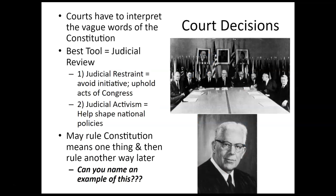Court decisions have perhaps the greatest effect in terms of changing the Constitution indirectly, because of interpretation. The court's position is to use the laws that exist but interpret them in the best way they see fit at that time. Because of the vague wording of the Constitution, it's open to interpretation. The tool of judicial review — where the court can examine laws, amendments, and all of the Constitution and determine if they're constitutional — is the most important power. This leads to two specific terms linked to how courts act: judicial restraint and judicial activism.